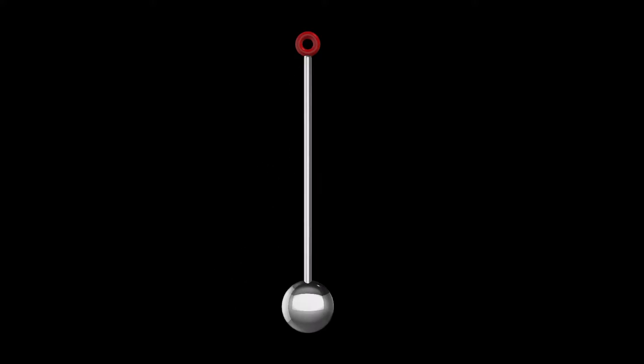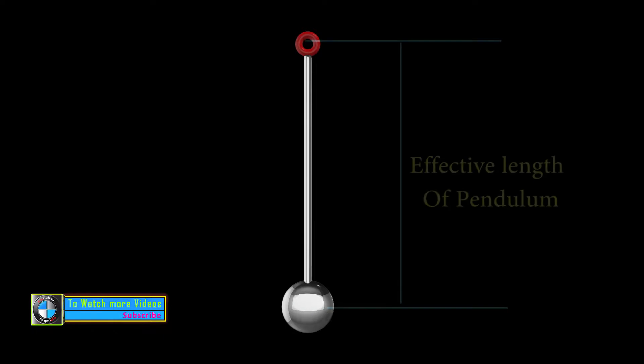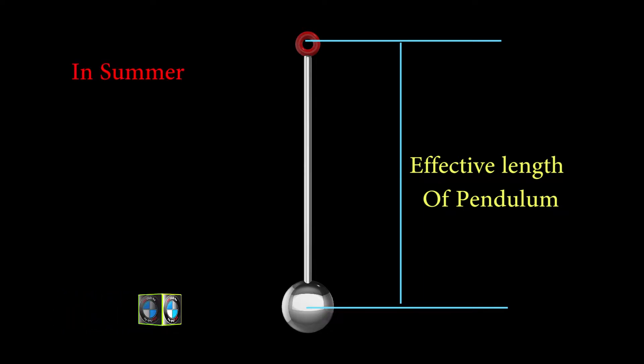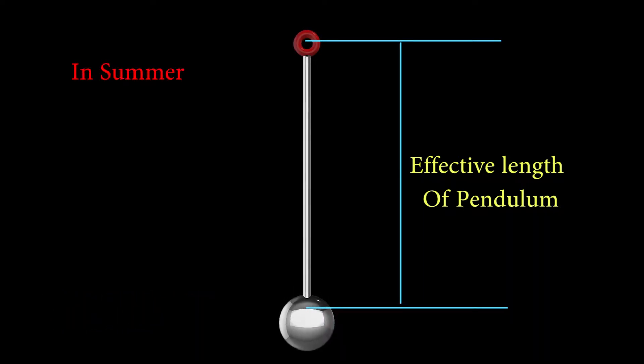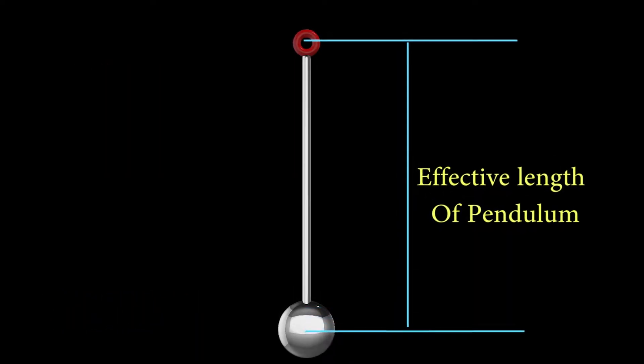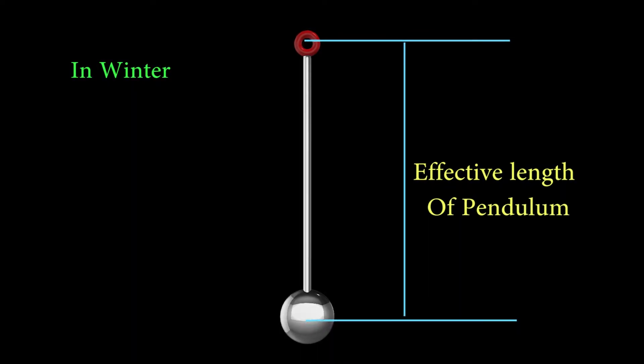The time of the clock depends upon the effective length of the pendulum, i.e., the length between the point of suspension and the center of the bob. During summer, this effective length increases and also decreases in the winter season.